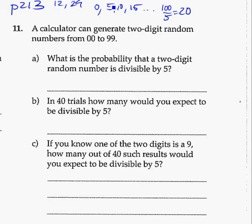So we have a total number of 20 digits, or 20 numbers from 0 to 99 that will be divisible by 5. So our total is 20 out of 100 numbers, which is equal to 0.2. That's the probability of getting a two-digit number that is divisible by 5.